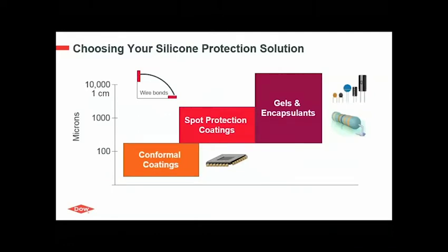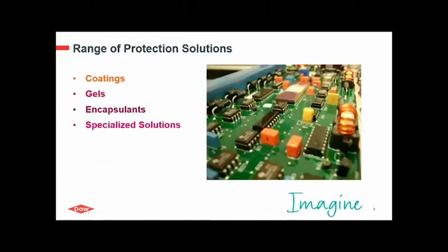This graph shows you which material to choose for your application. In case you have a very flat board design requiring only a very thin protecting layer, choose a conformal coating. If you have taller components on your board, this may require a spot protection coating — these materials have an increased viscosity compared to conformal coatings and can build up higher to protect taller components. And if you have a very complex landscape of components with different sizes, you may want to choose a gel or an encapsulant to pot the whole module. We will now have a closer look into the range of DAO protection solutions, starting with coatings.